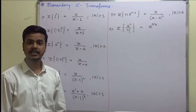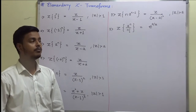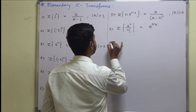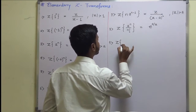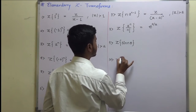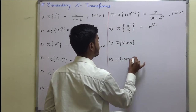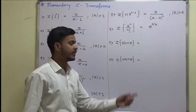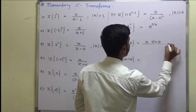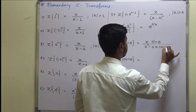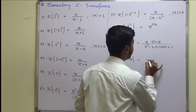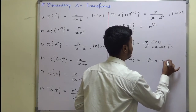If these Z transforms are clear, we can move ahead by taking Z transform of sine and cosine. So the Z transform of sin(nθ) is z·sin(θ)/(z²-2z·cos(θ)+1), and the Z transform of cos(nθ) is (z²-z·cos(θ))/(z²-2z·cos(θ)+1).